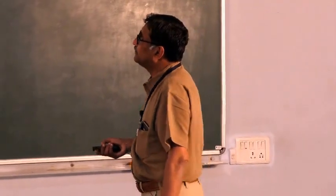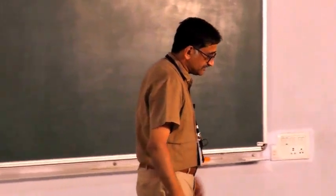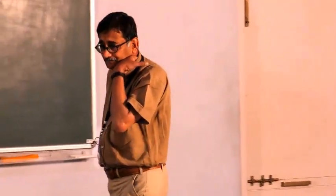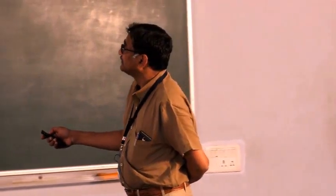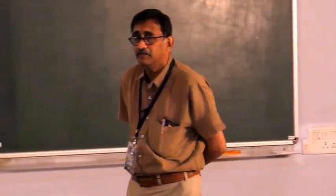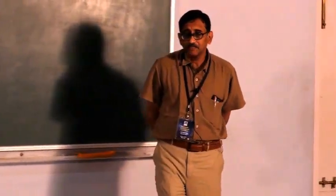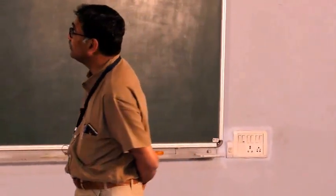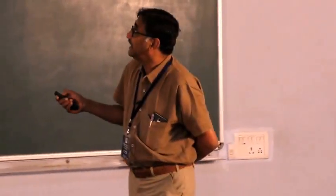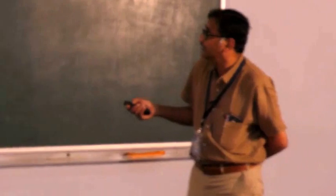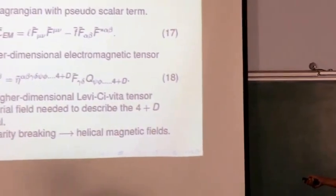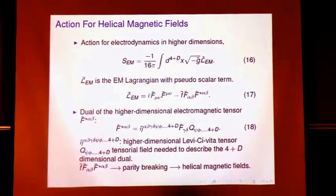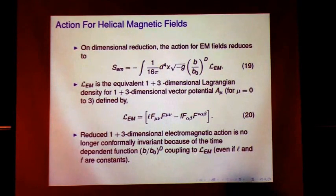Now, one can actually do one more thing is that the field which we have considered are all non-helical magnetic field. Now, what can happen is we can add a helical term. Now, what happens in the normal four-dimensional case, if you have a term of this kind, that is f mu nu f mu nu prime, then such a thing becomes a surface term which can be integrated out. Now, in higher dimension, that is not the case. So now what we do is, we consider the higher dimensional scenario and we include a helical term in the higher dimension. And as of now, we have put two parameters, L and f bar over here.